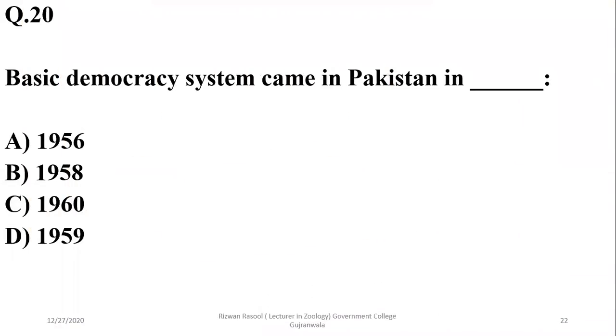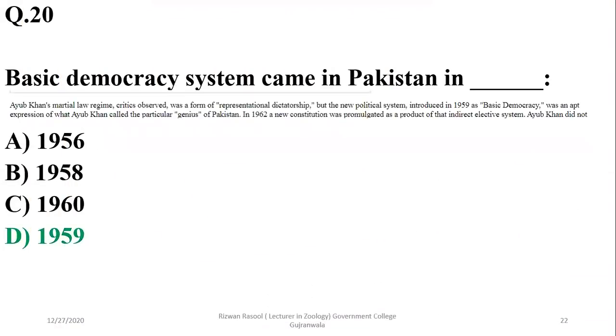Question 19: The Basic Democracy system came to Pakistan in 1959. So delta is the answer.